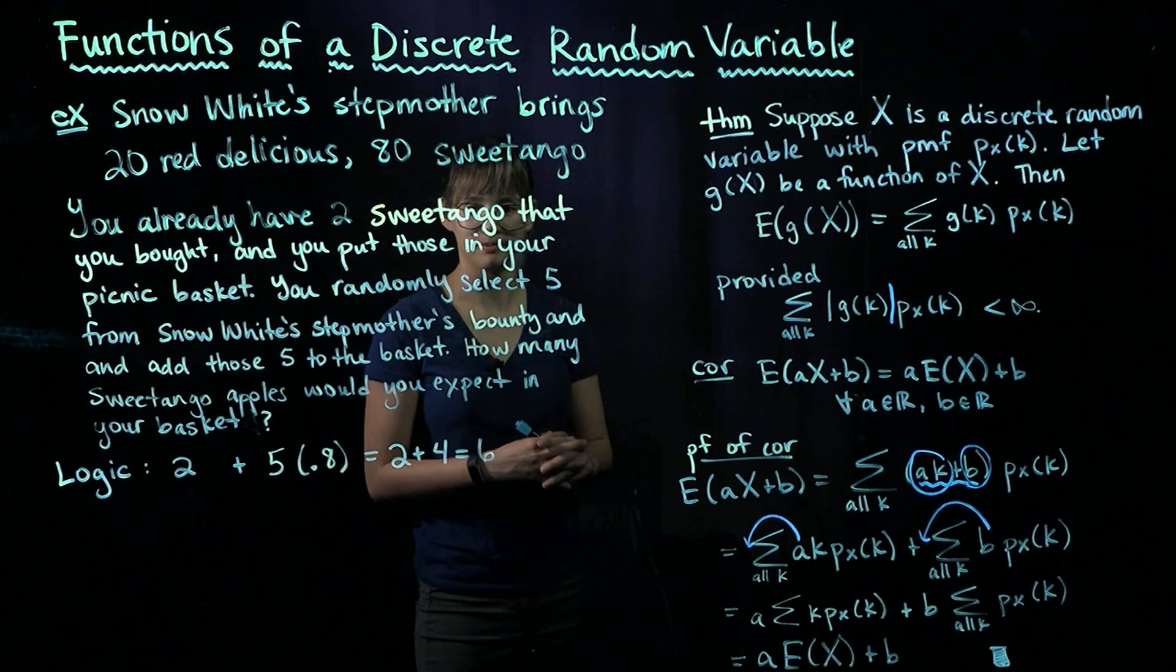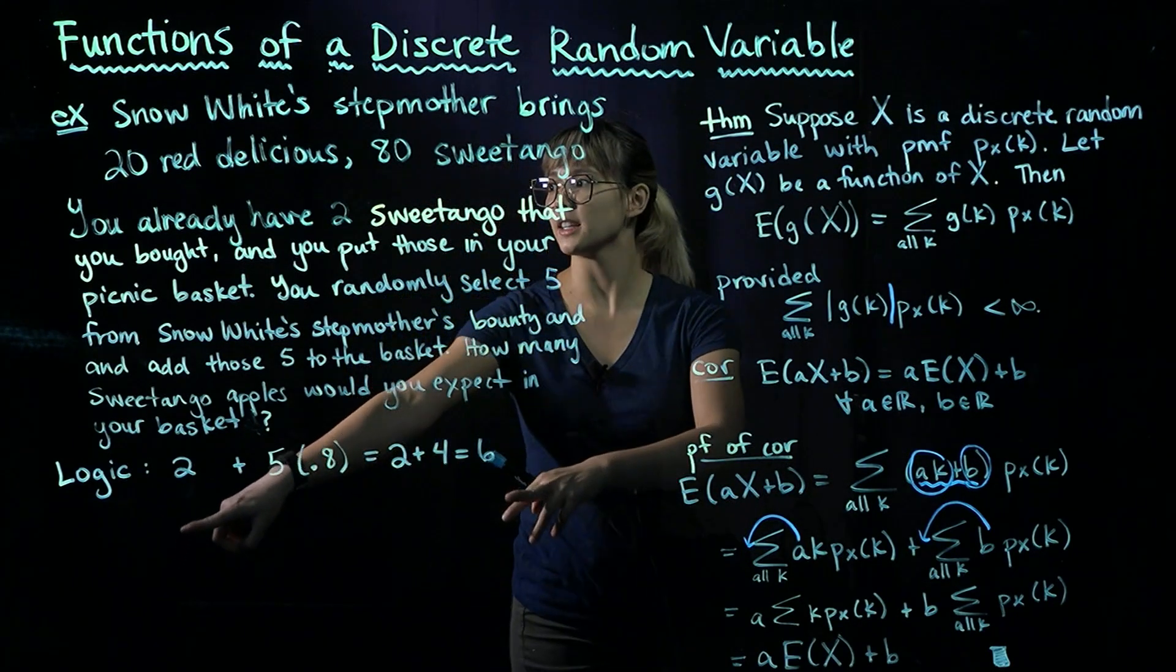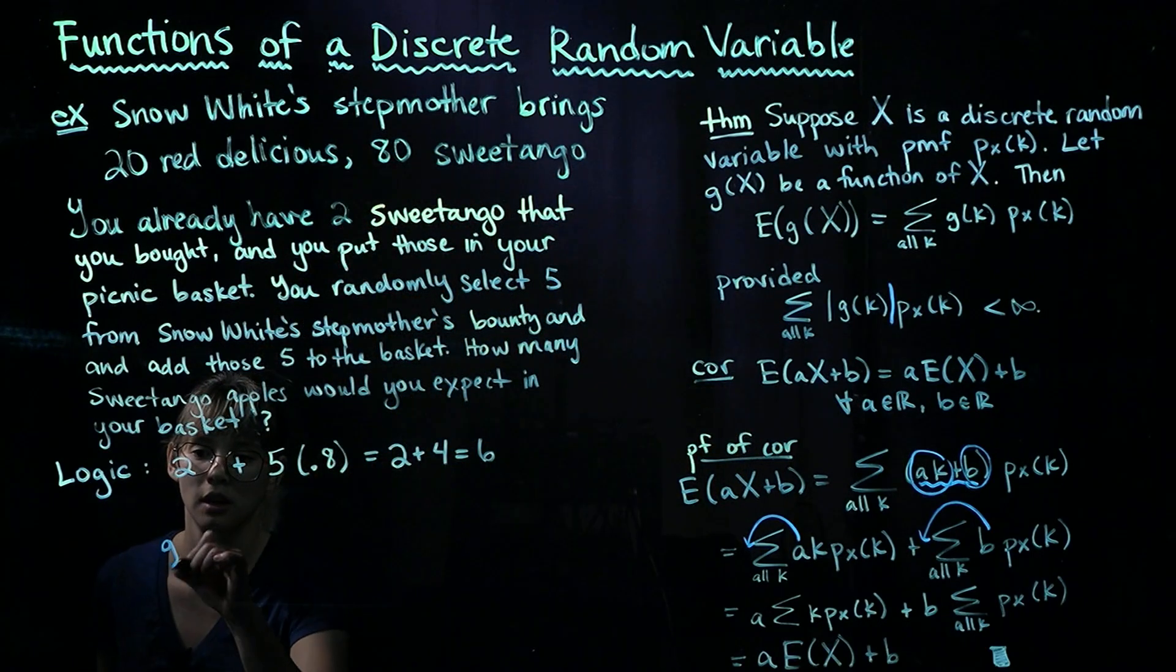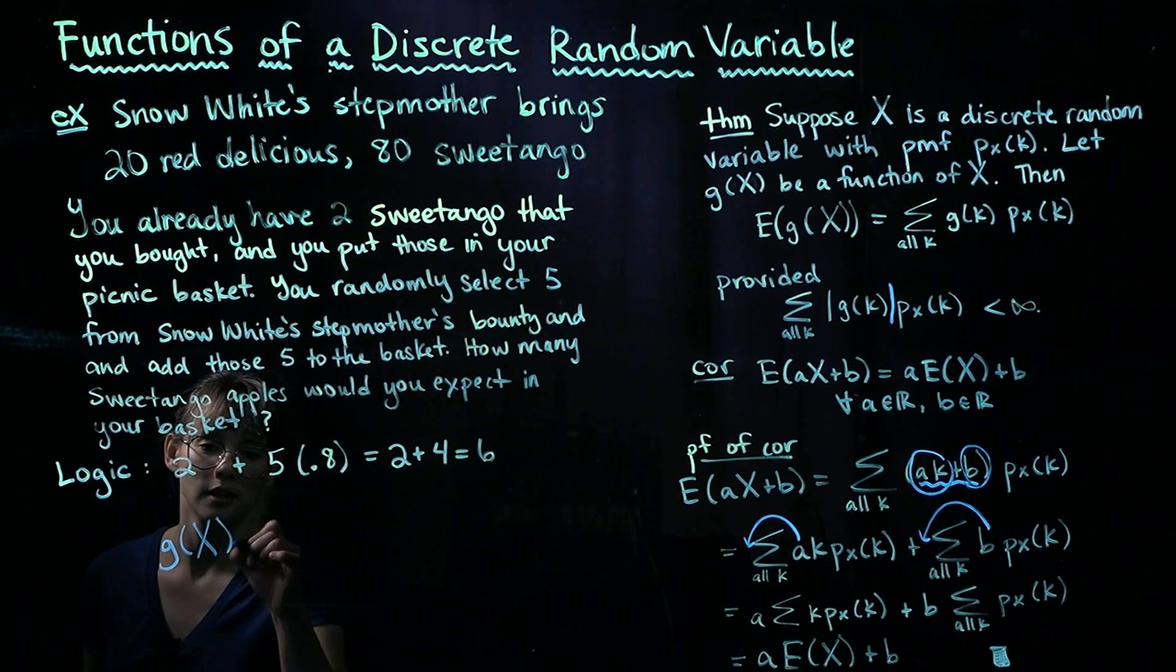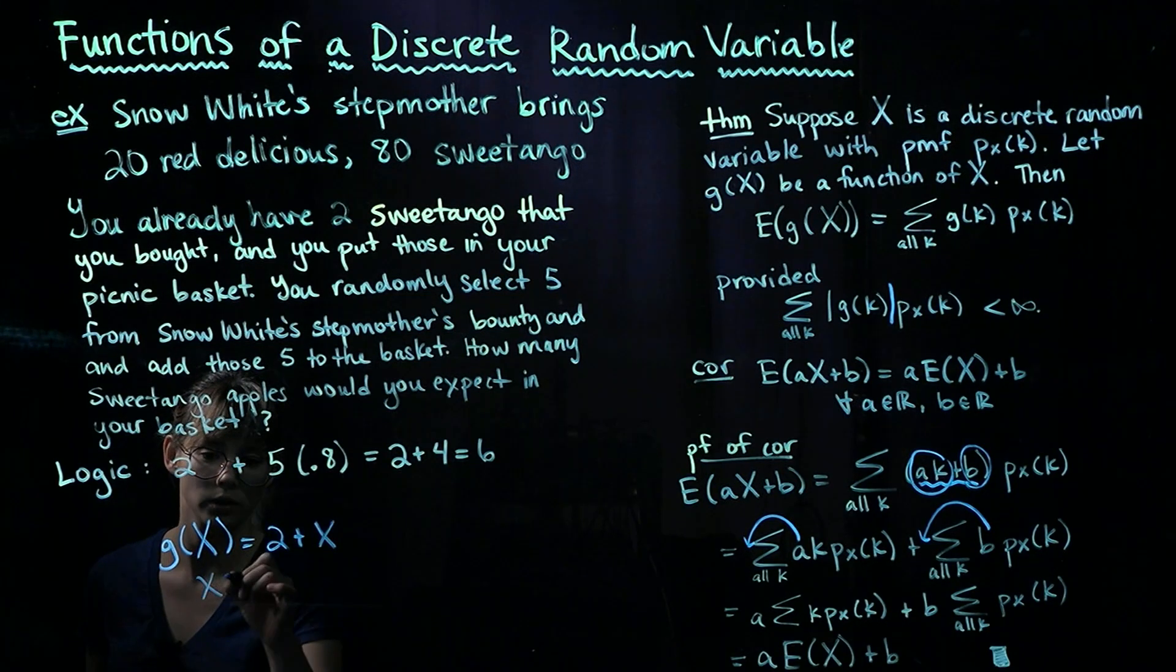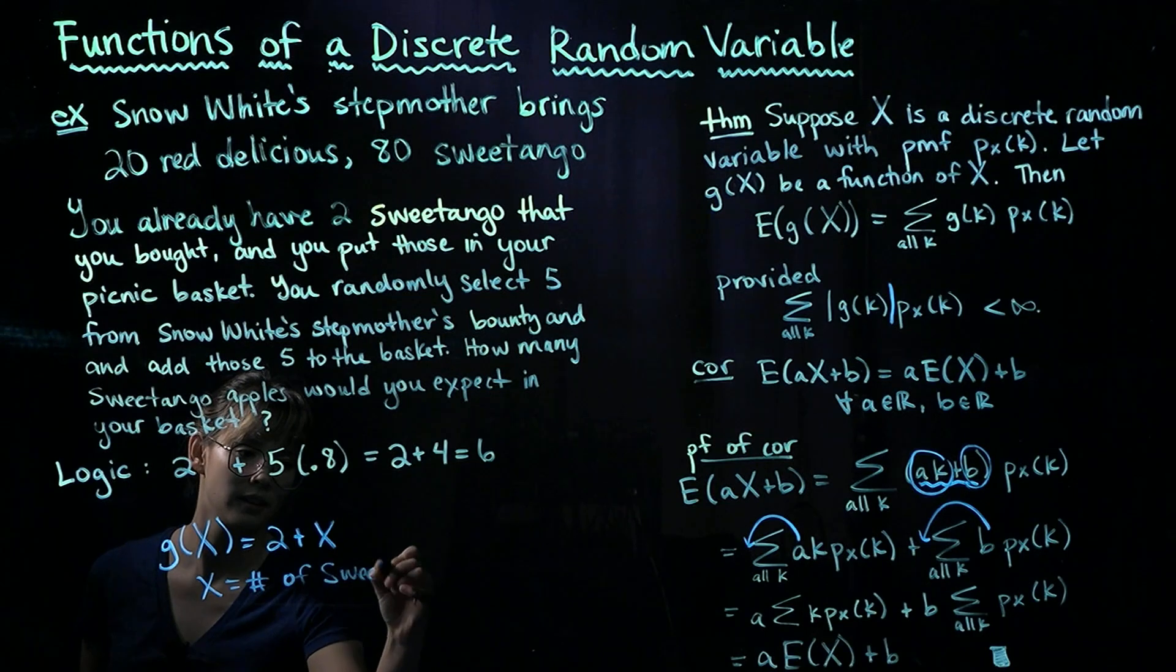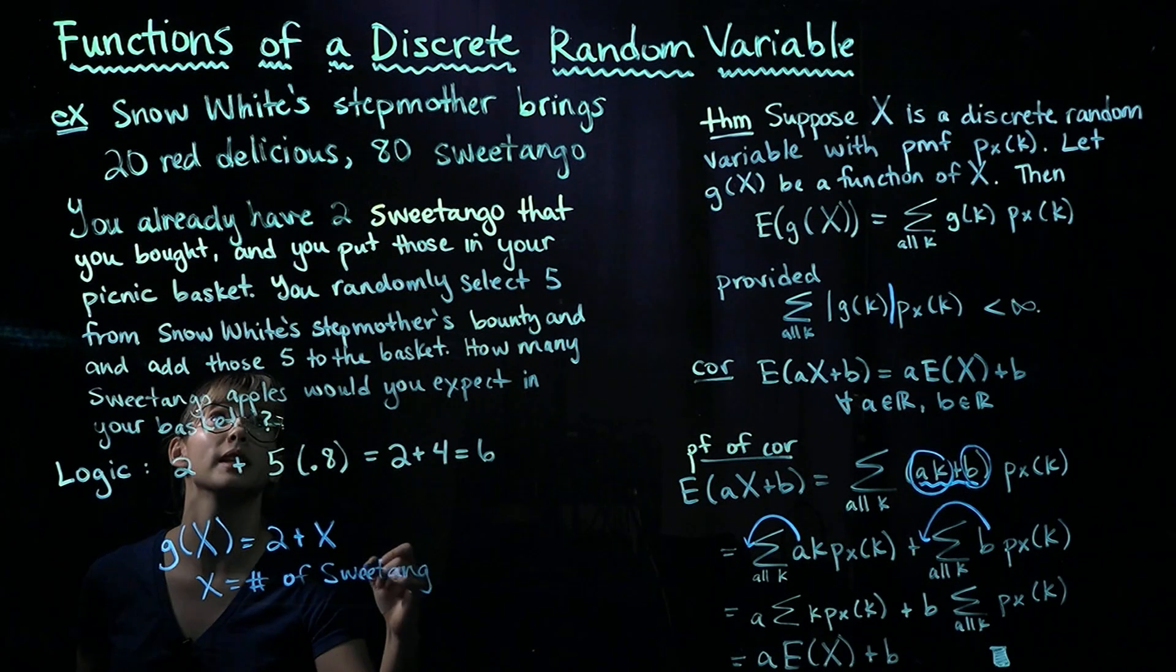So in our Snow White example, the way that we can apply this is we can define our function g(X) equal to 2 + X, where X is equal to the number of Sweetango apples that you select from Snow White's stepmother.